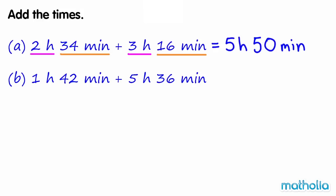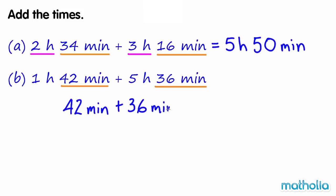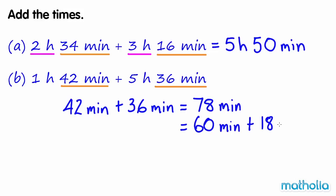We need to find 1 hour 42 minutes plus 5 hours 36 minutes. Start by adding the minutes: 42 minutes plus 36 minutes equals 78 minutes. We can regroup 78 minutes into 60 minutes and 18 minutes, which is equal to 1 hour 18 minutes.